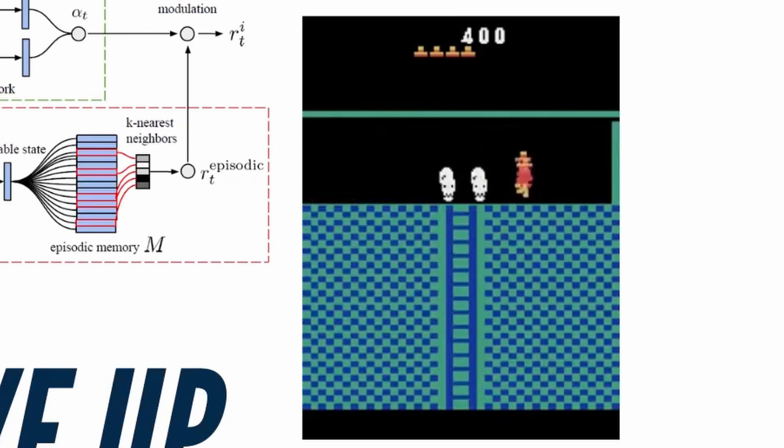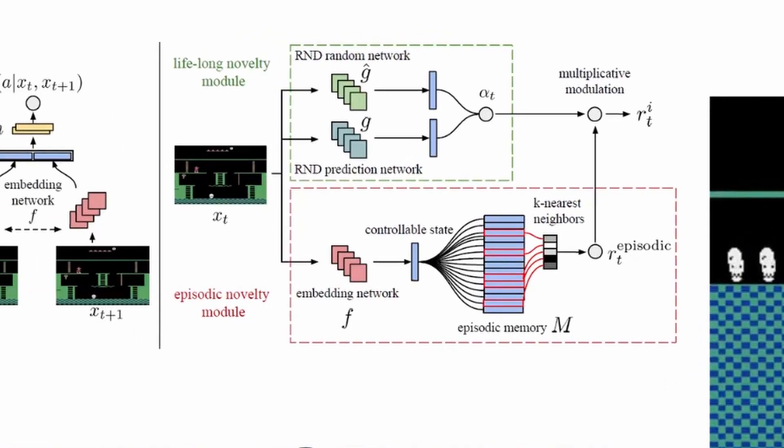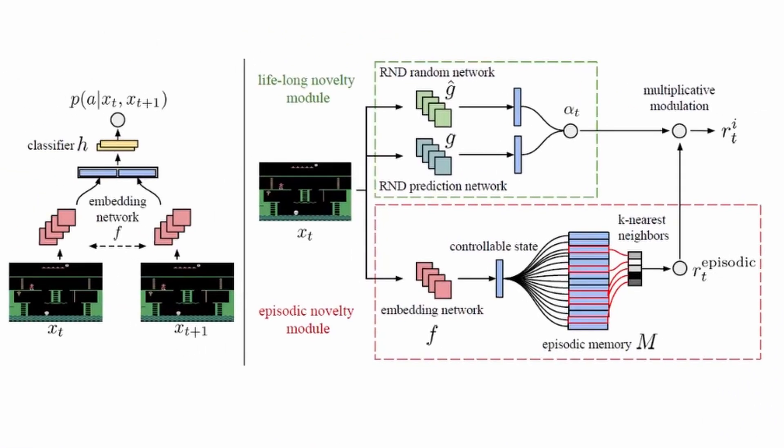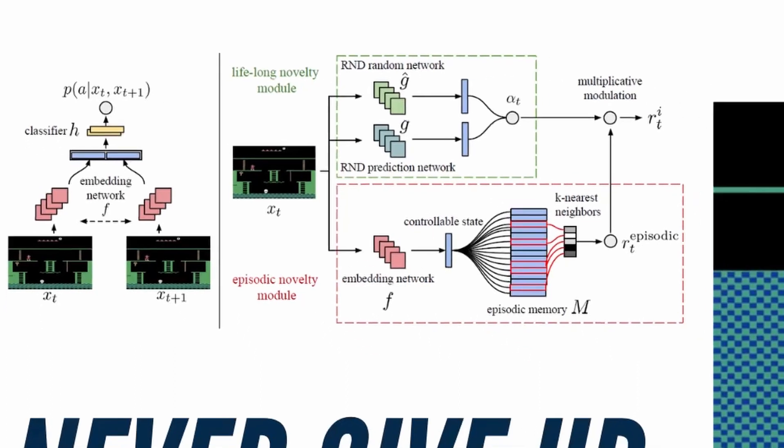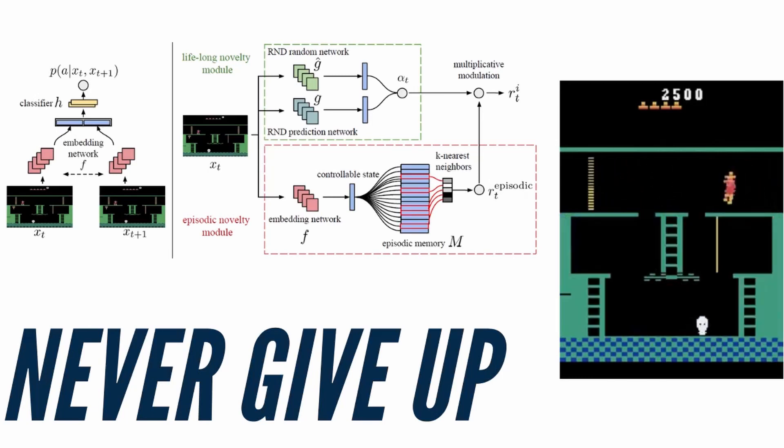The breakthrough of Never Give Up is in its dual intrinsic module that is composed of a short-term episodic novelty module and a lifelong novelty module. Never Give Up also employs a universal value function approximator to learn multiple exploratory value functions within a single neural network.